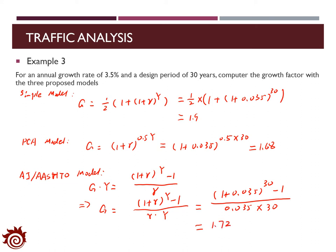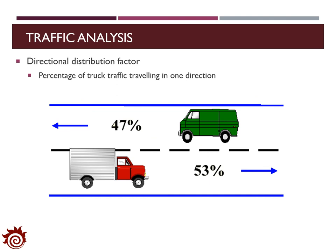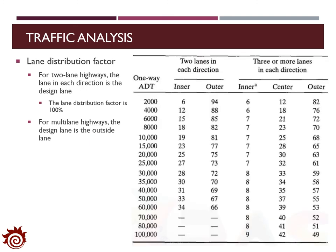The directional distribution factor D is defined as the percentage of truck traffic traveling in one direction. For example, if 47% of trucks travel left, D = 0.47 for that direction, and if 53% travel right, D = 0.53 for that direction. Even within the same direction, traffic differs between lanes, so the lane distribution factor must also be considered. For a two-lane highway, each direction has one lane, which is the design lane, and the lane distribution factor is 100%.